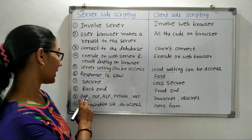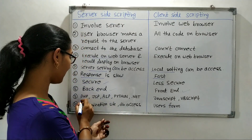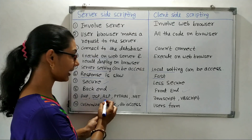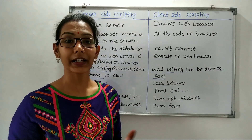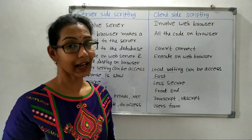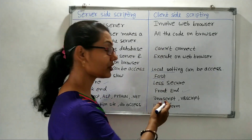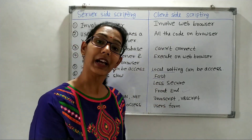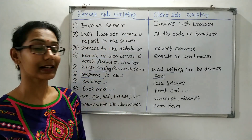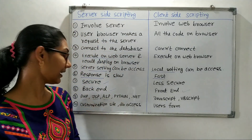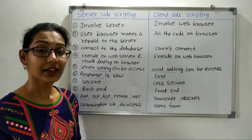Examples of server-side scripting include PHP, JSP, ASP, Python, Ruby, .NET, Perl, etc. Examples of client-side scripting include JavaScript and VBScript.